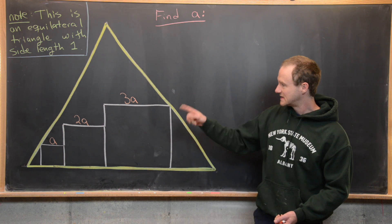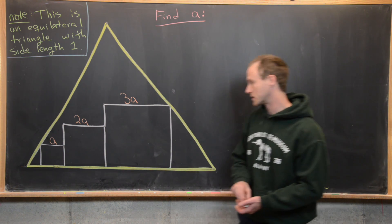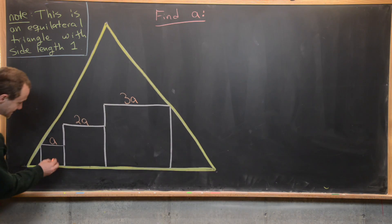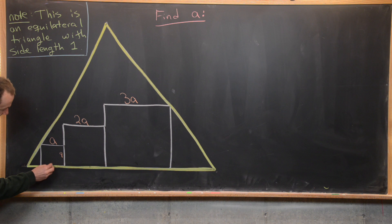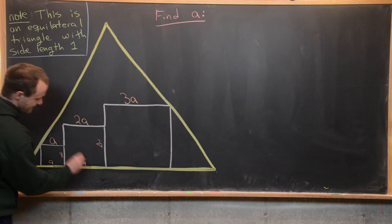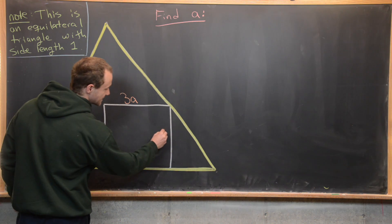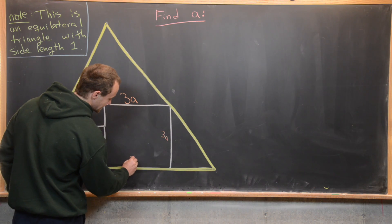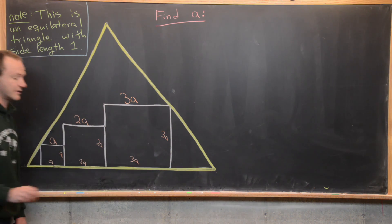So I want to notice that since these guys are squares we know that this side is also length a and this side down here is also length a. Furthermore this is length 2a, this thing down here is length 2a, this is length 3a, and this thing down here is also length 3a.